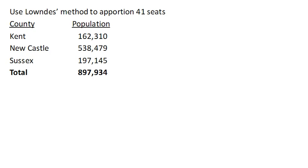We're going to look at one more method called Lowndes' method. This one has never actually been used in Congress. It was proposed by a congressman from South Carolina, which is a fairly small state, and not surprisingly, this method favors small states.